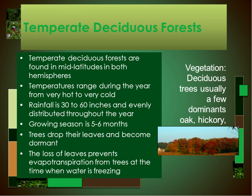Vegetation then is mostly deciduous. You'll maybe recognize a few dominants like oak trees, hickory, maples, those kinds of trees. The type of animal life includes a lot of tree-dwelling species, such as squirrels, and some grazing animals, particularly browsers like deer, that can eat the low-level browse that's available in these systems.